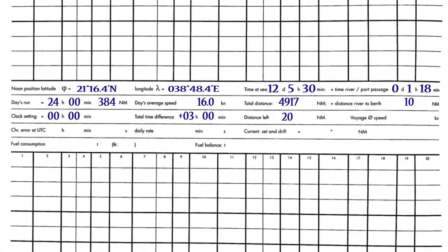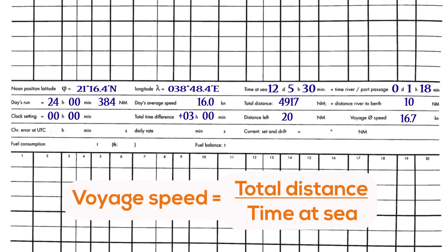Distance to go — more often called distance left — is the distance from noon to pilot boarding ground. Voyage speed is calculated by total distance divided by time at sea.